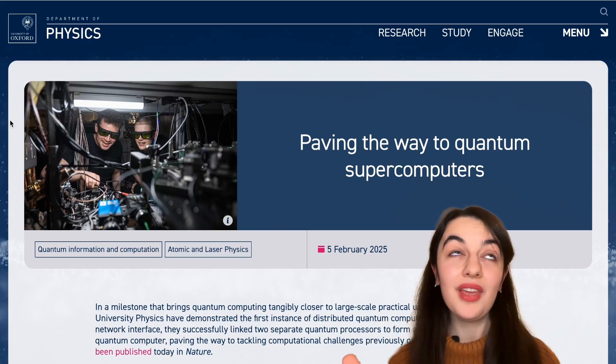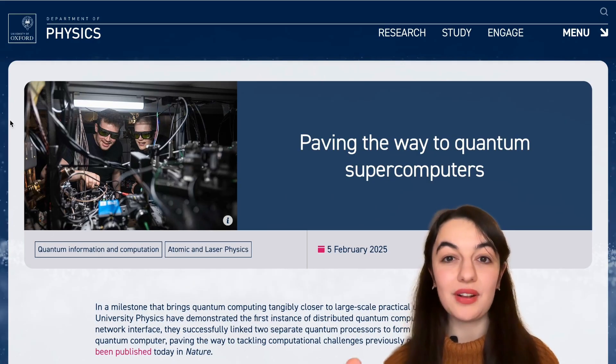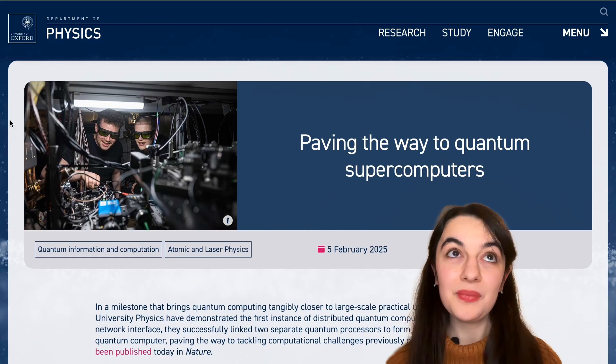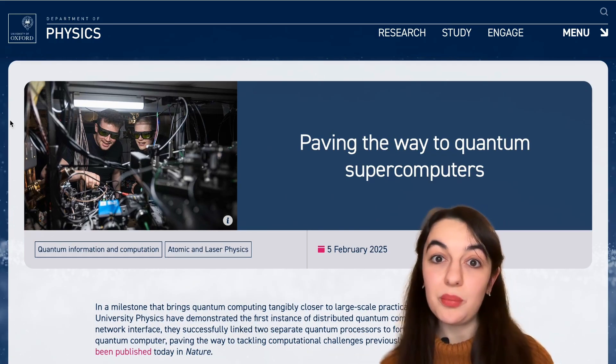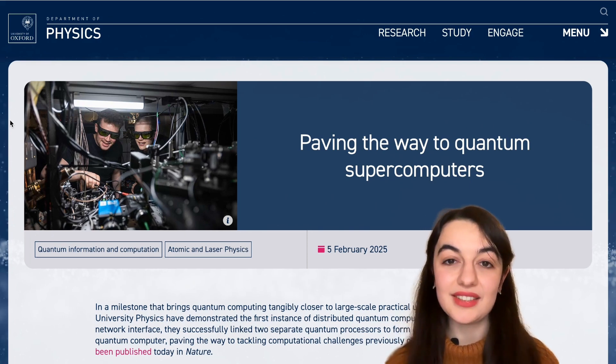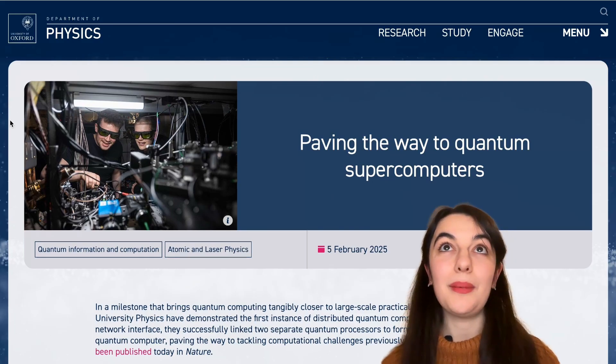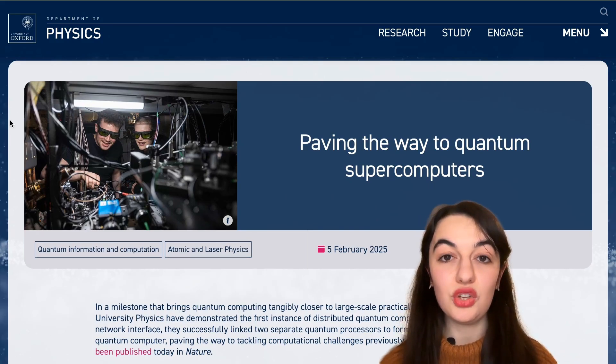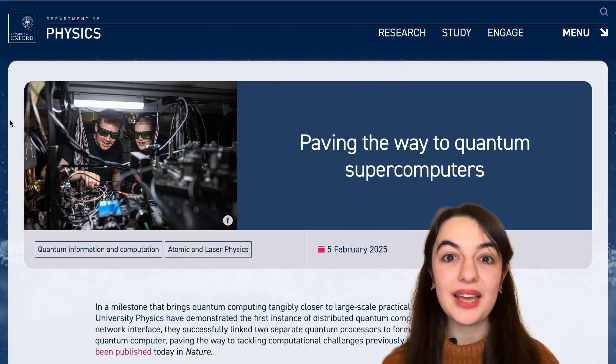And what happens is that Alice does a joint measurement on the qubit she wants to send, let's call it the data qubit, and her entangled qubit. She measures them both. She gets two bits of classical information from that measurement, so 00, 01, 10, 11. She sends those bits over to Bob, it's just classical bits, so she can send it over the phone or however she wants. And then based on that information of what those two bits are, Bob then applies one of four different possible operations to his qubit.